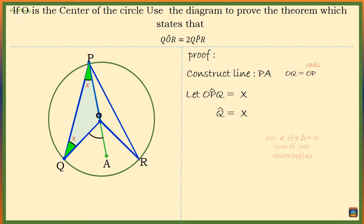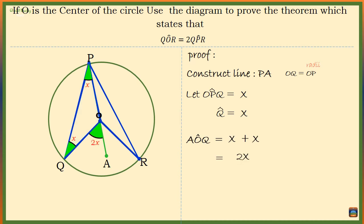The reason is that the exterior angle AOQ is equal to the sum of the interior opposite angles, so this angle is X plus X, which is 2X.